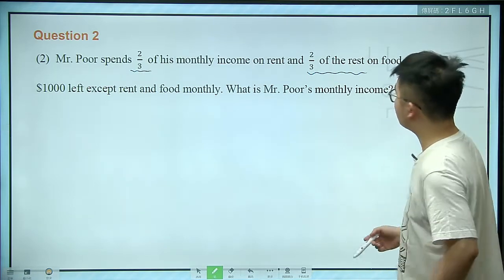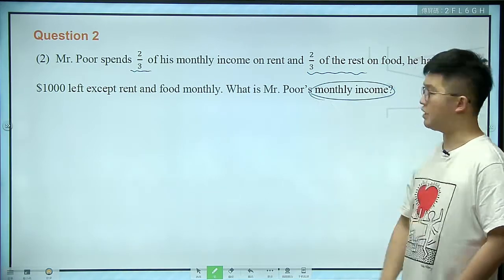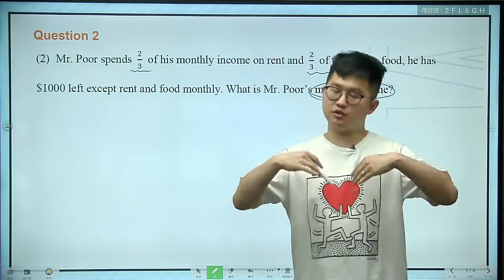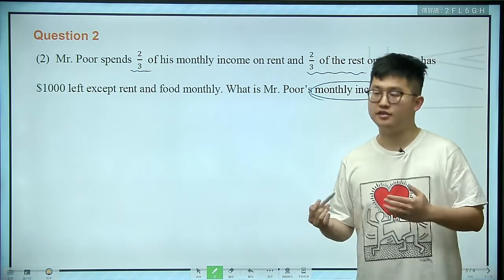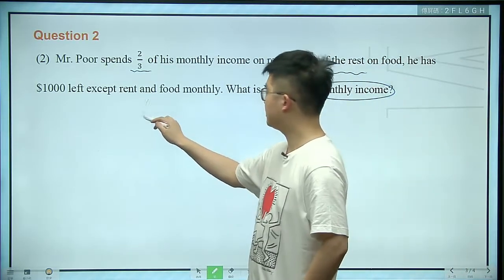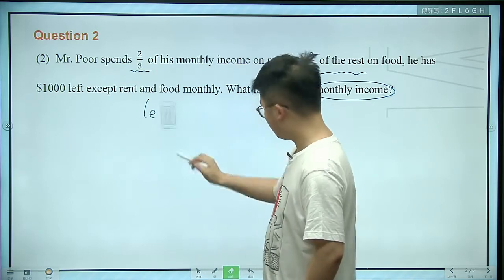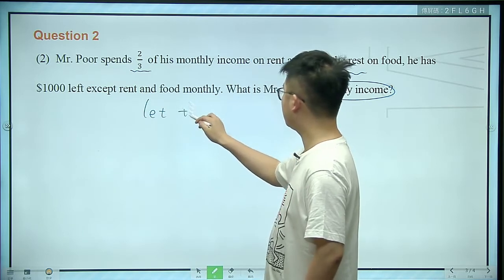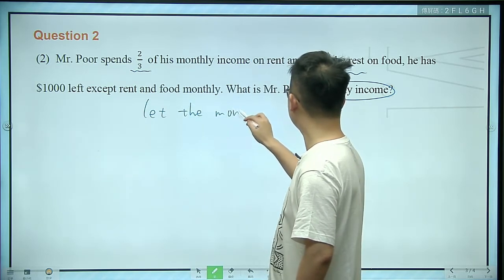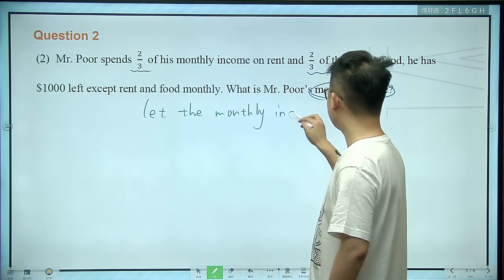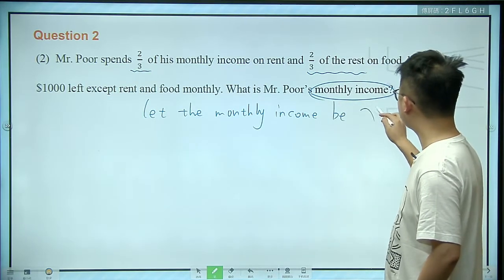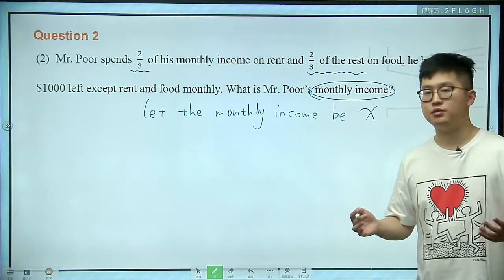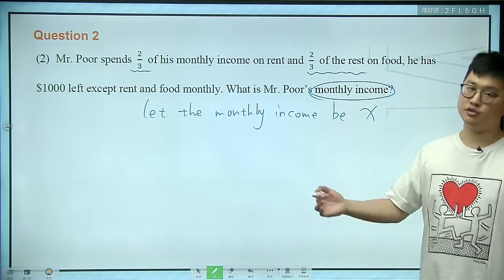The question asks: what is Mr. Paul's monthly income? To solve this problem with an equation, we must have an unknown. In most occasions we use x. Let the monthly income — which is what we want to know — be x. That finishes the first step.